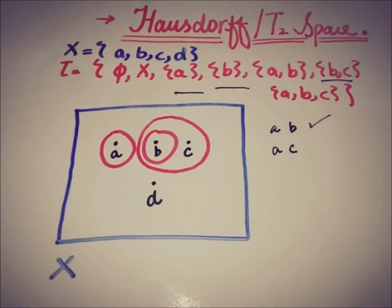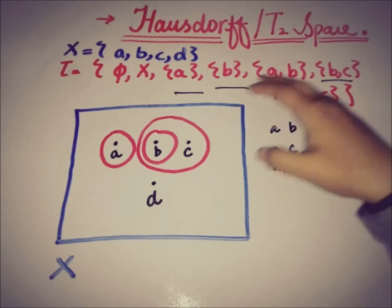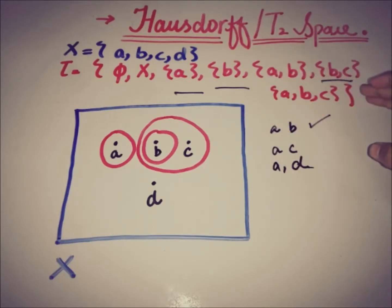Now if we take A and D, we have open set A here, but we don't have any open set such that D contains in it and the intersection of D with A is empty. Because D is only in X, and X is this whole open set, and the intersection of X with A is not empty. So this implies that X is not a T2 space.